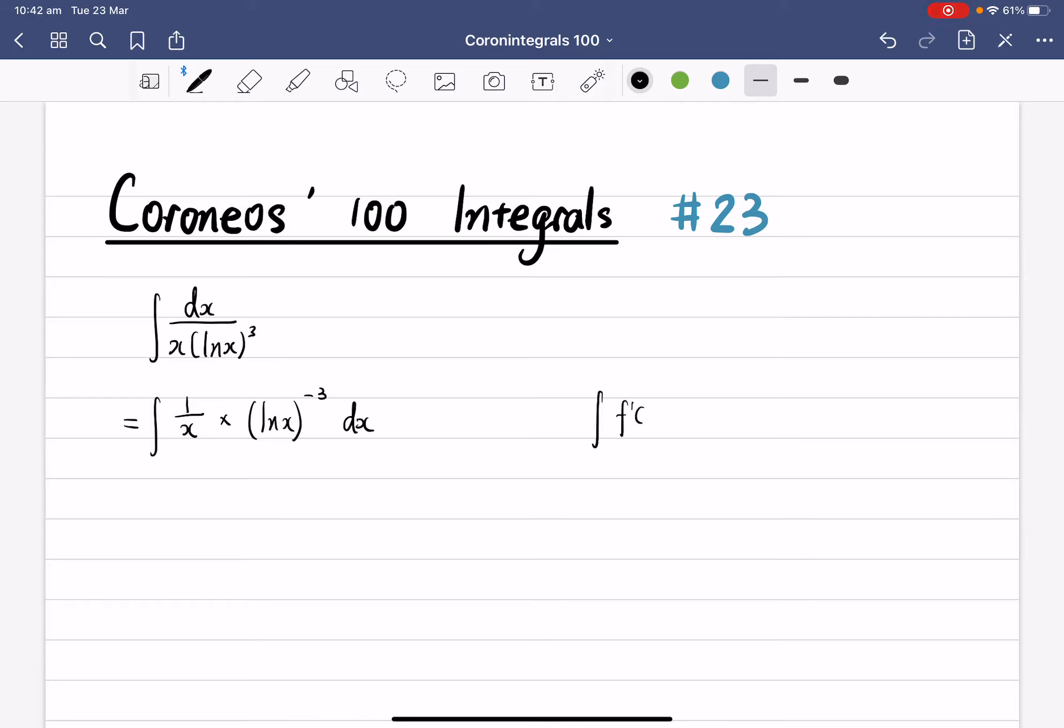So we've got to integrate f'(x) multiplied by f(x) to the power of n dx. And the answer is equal to 1 over n plus 1, f(x) to the power of n plus 1 plus c. That's the formula we're using.